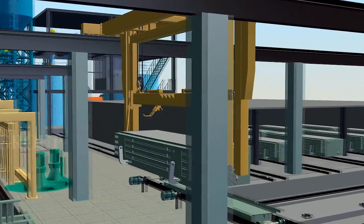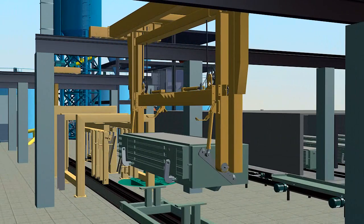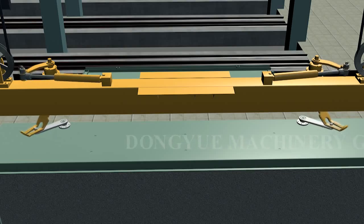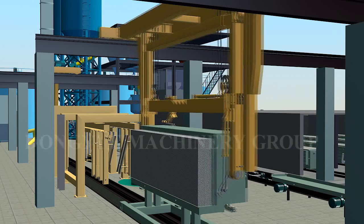The crane will reverse mold box 90 degrees and put it on the cutting cart. The crane manipulator opens the mold box and demolds automatically.